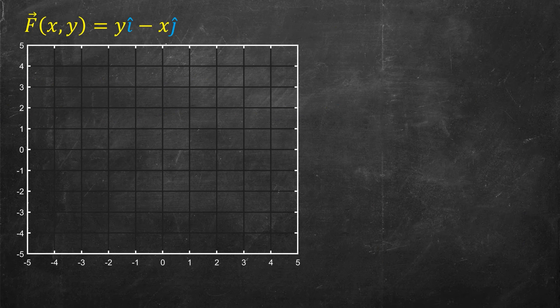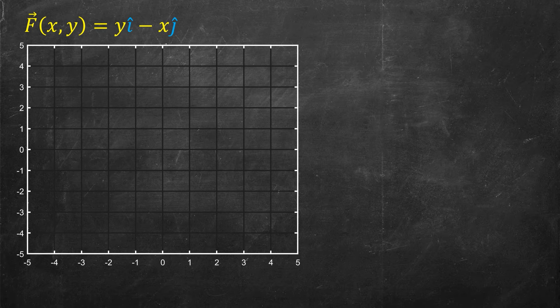Now what I want to do is actually draw by hand a particular vector field. I'm going to draw the vector field y in the i-hat and minus x in the j-hat. And so what I'm going to do is just plug in various values of x and y and see what vectors I get. So for instance, if I take the vector field and I plot it at the point (0,0), then I'm just going to get the vector (0,0) out. And so I can represent that by just putting a little dot right at the origin of the location (0,0).